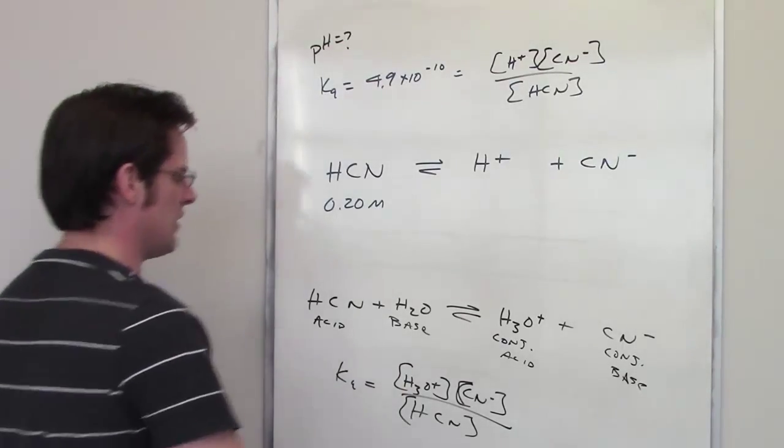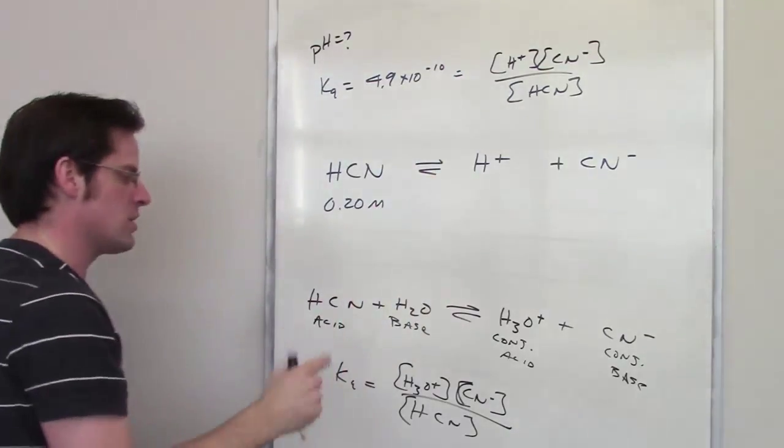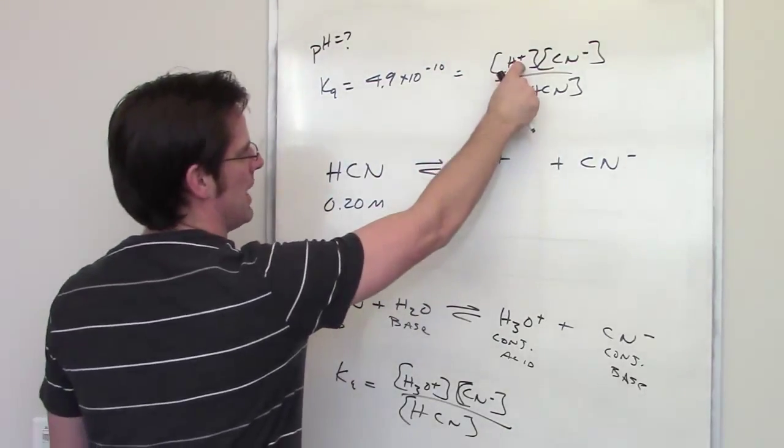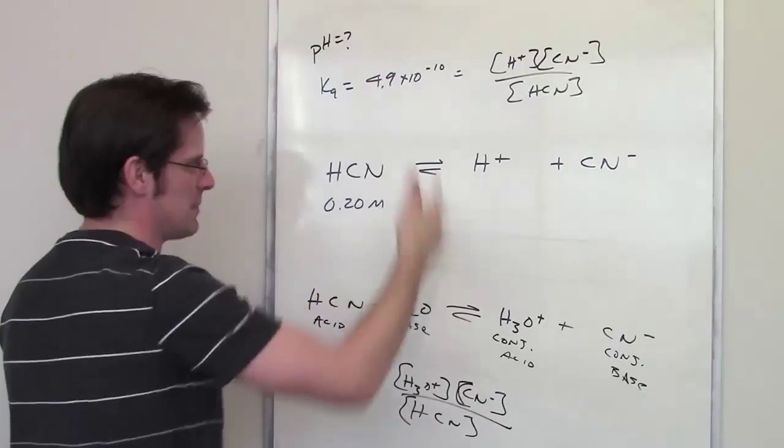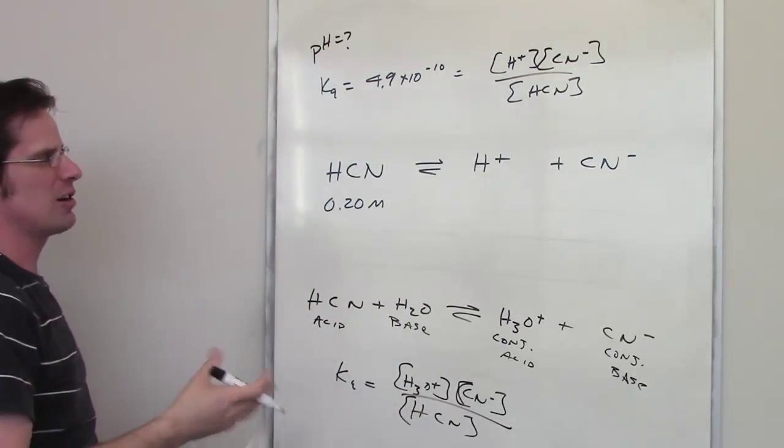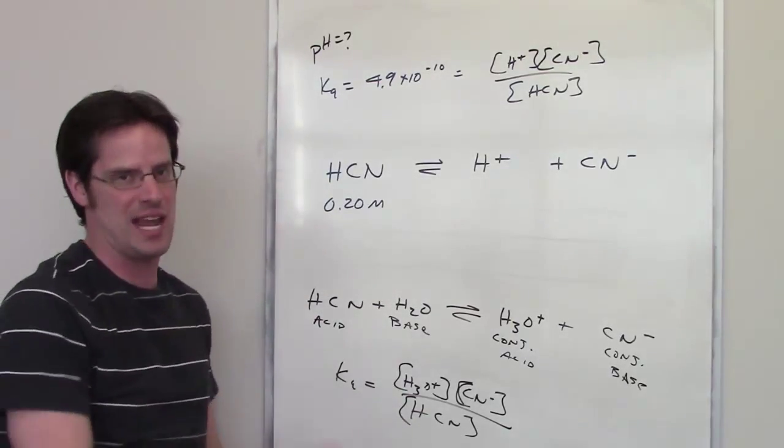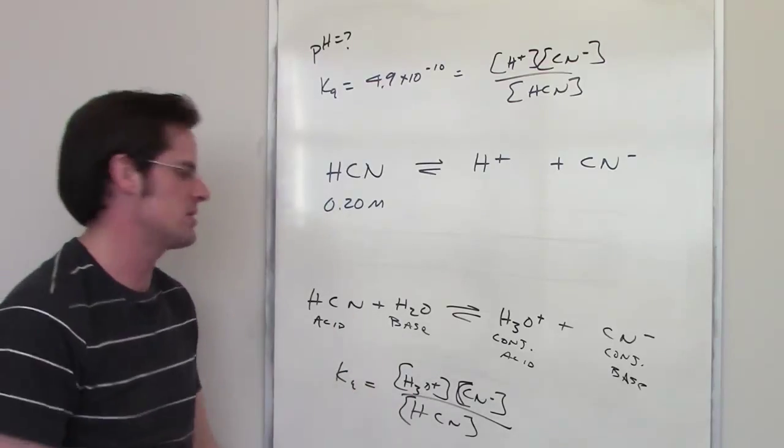What's the difference between the K-expression of this bottom thing and the K-expression for this top thing? Well, you should see that the only difference is the H+ and the H3O+, one is substituted for the other. And that's why I sometimes say that H+ and H3O+ are kind of interchangeable. H+ is sort of the lazy person's way of writing H3O+, at least in aqueous equilibrium scenarios.